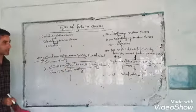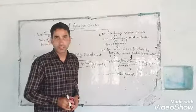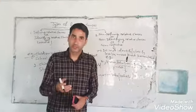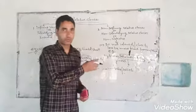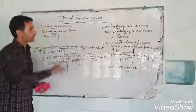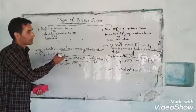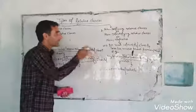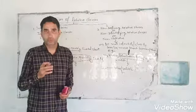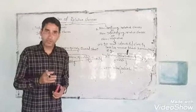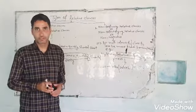Non-defining relative clauses are used in formal writing. To summarize: in defining relative clauses, no commas are used; in non-defining relative clauses, you should use commas to separate the important information from the extra information. Thank you.